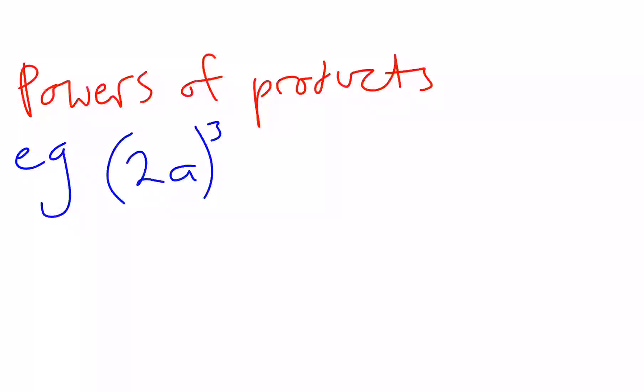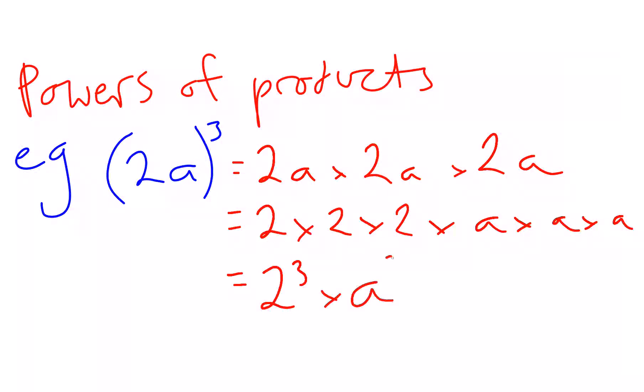If we expand this out, 2a all to the power of 3 means 2a times 2a times 2a. Now we know that we can rearrange a multiplication, so that's 2 times 2 times 2 times a times a, and we know from our Index Laws, just from dealing with indices really, 2 times 2 times 2 is 2 cubed, a times a times a is a cubed.